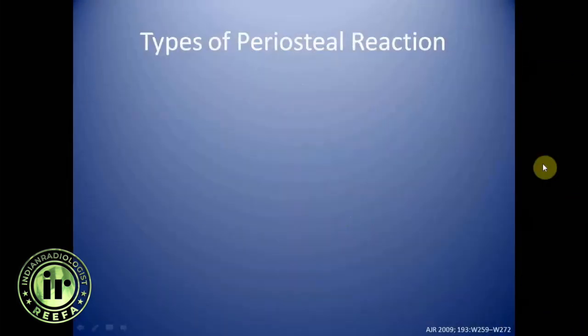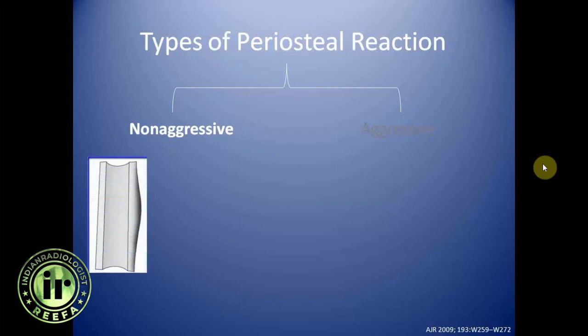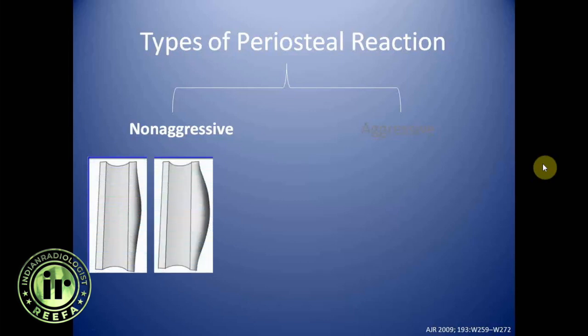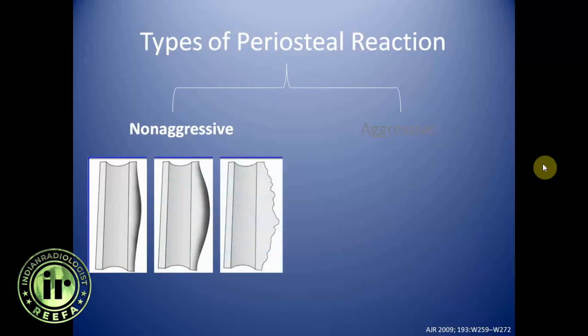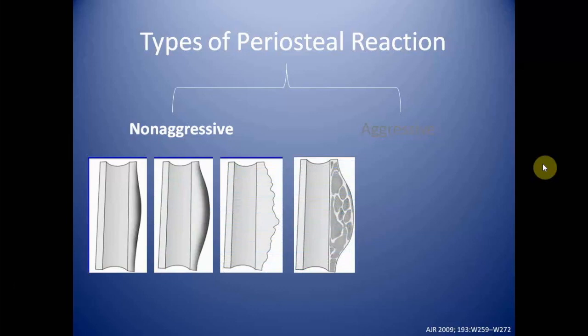Periosteal reaction can be categorized into two types: non-aggressive and aggressive. In the non-aggressive category we have a thin unilamellar periosteal reaction, a thick solid type, an irregular type, or a septated type of periosteal reaction.